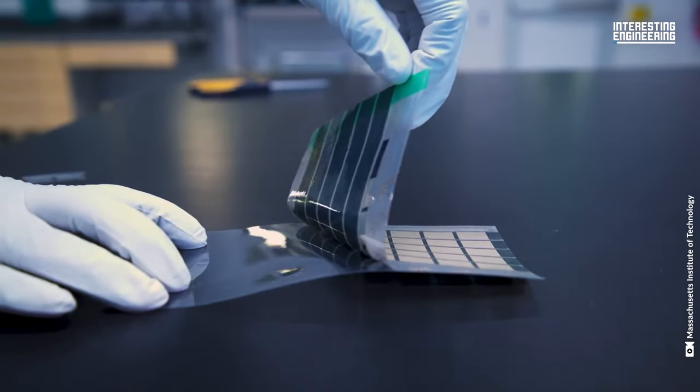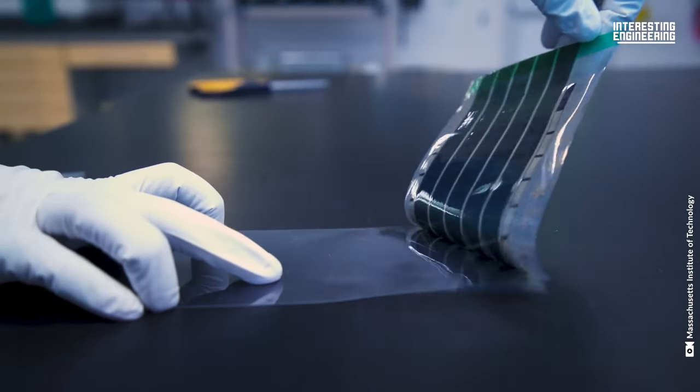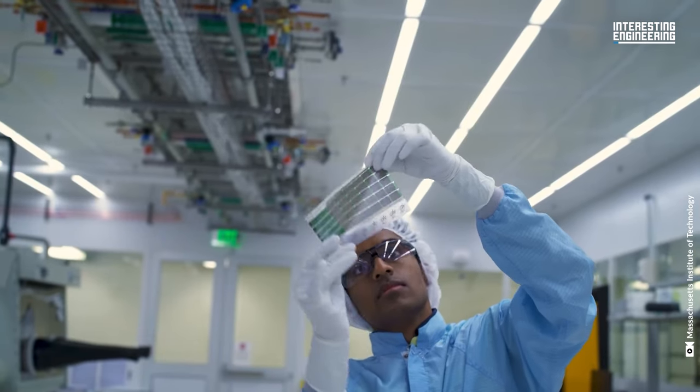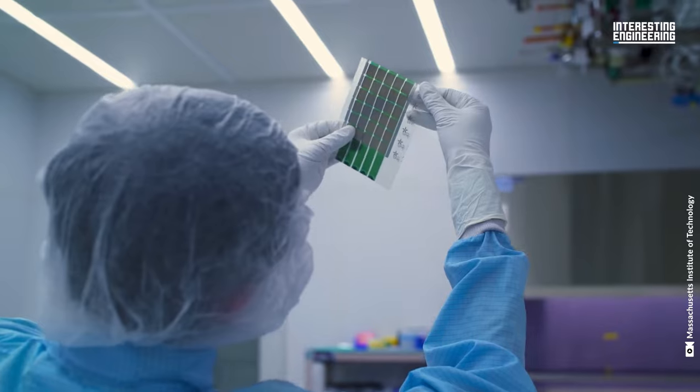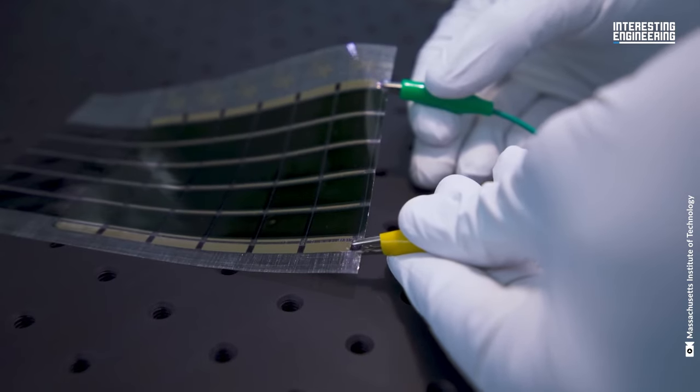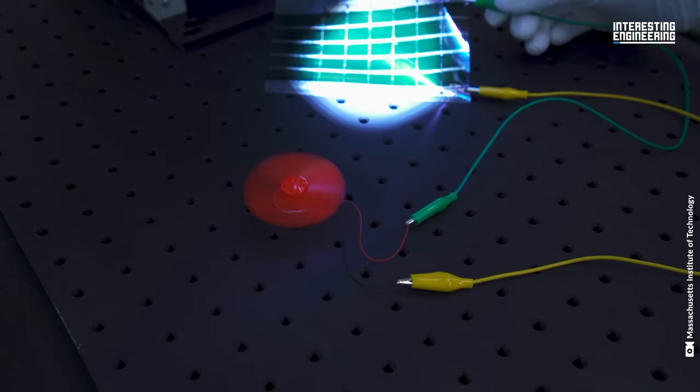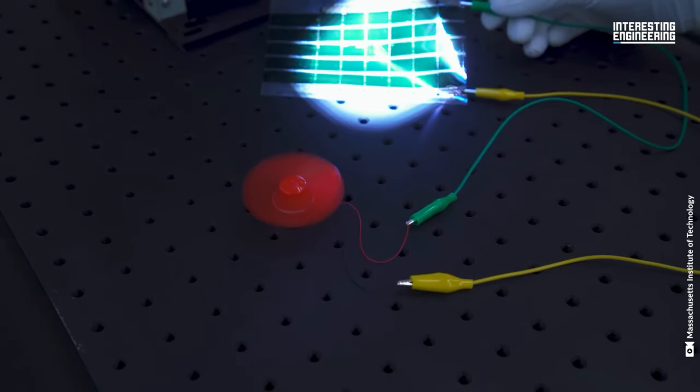This technology can turn any surface into a power plant. MIT engineers have made a groundbreaking advancement in the field of solar technology. They've developed an ultralight fabric solar cell that can transform virtually any surface into a power source. Calling these solar cells innovative would be an understatement. They're revolutionary.